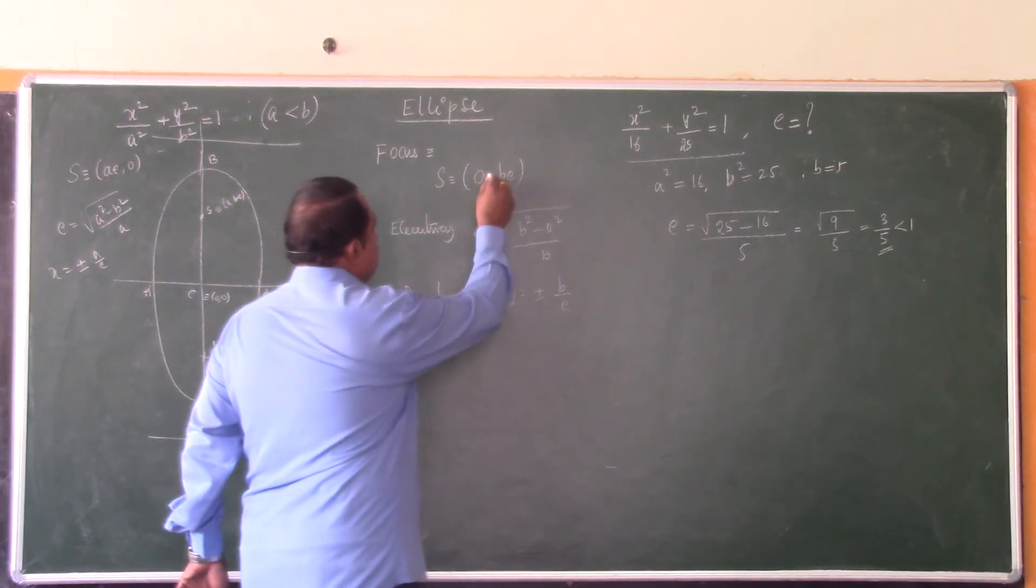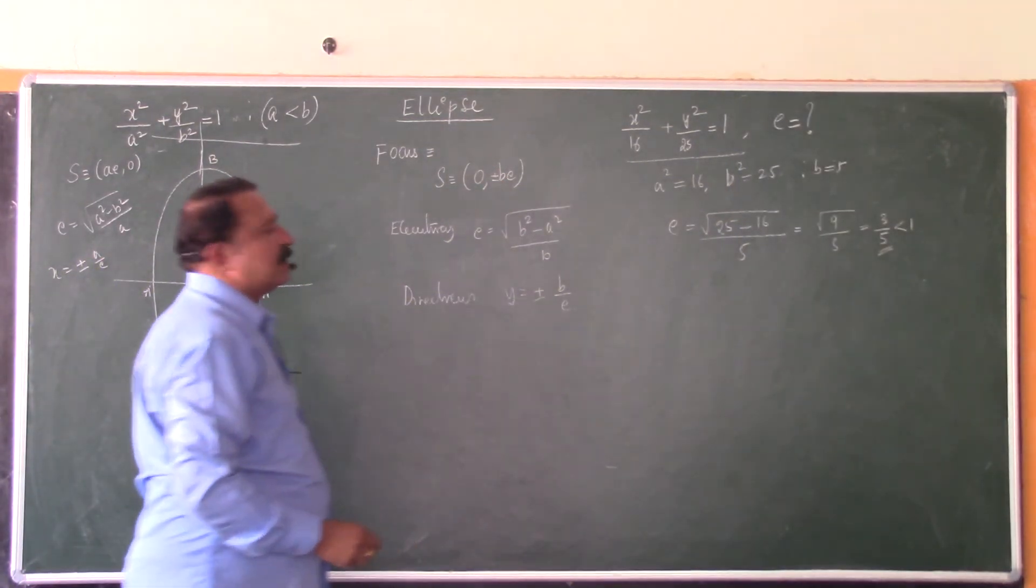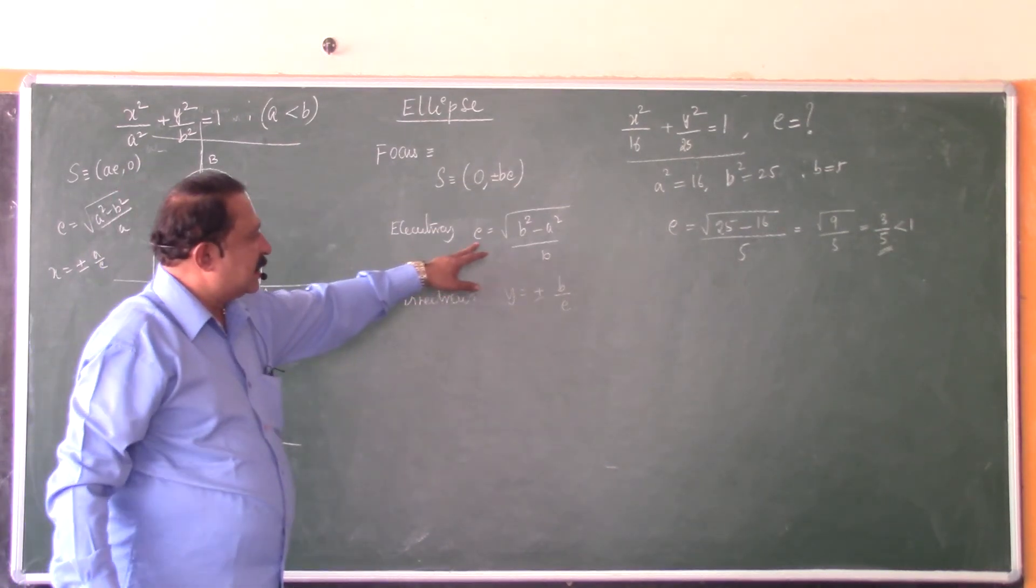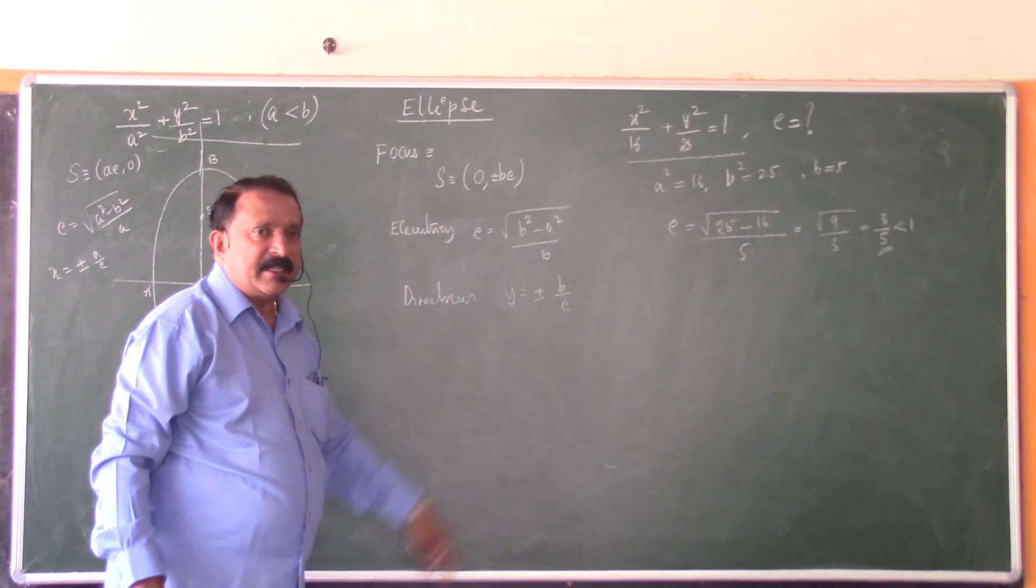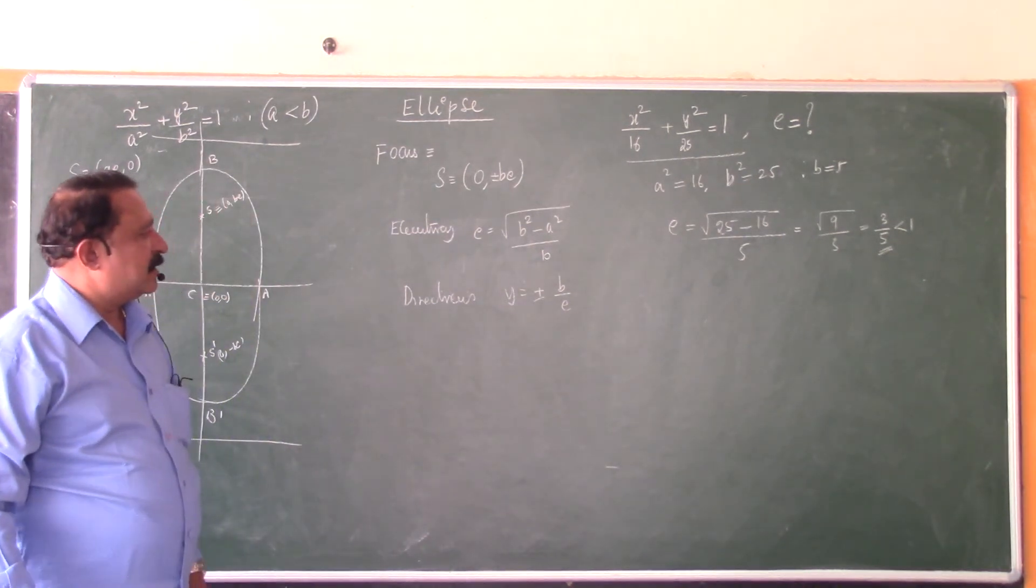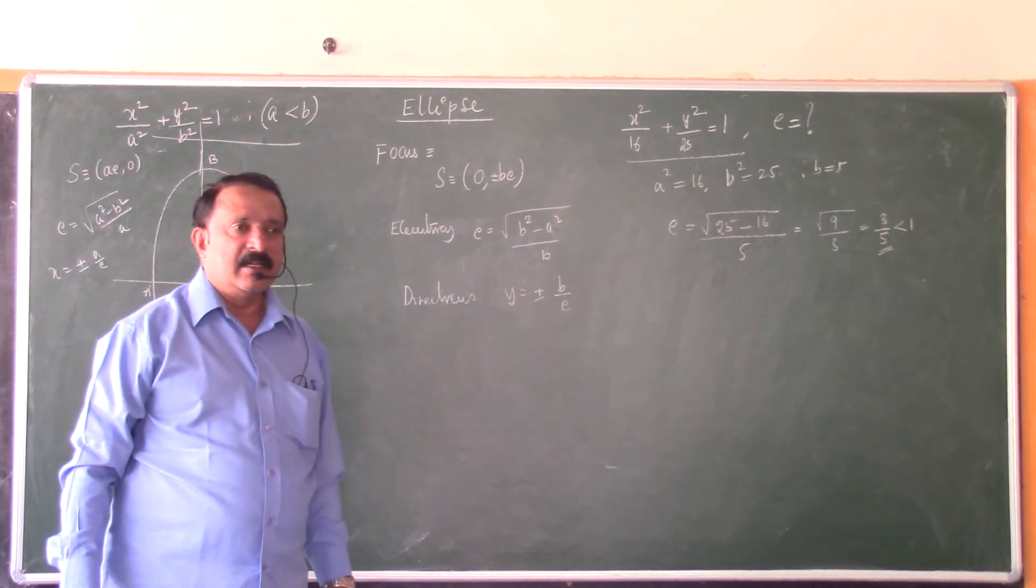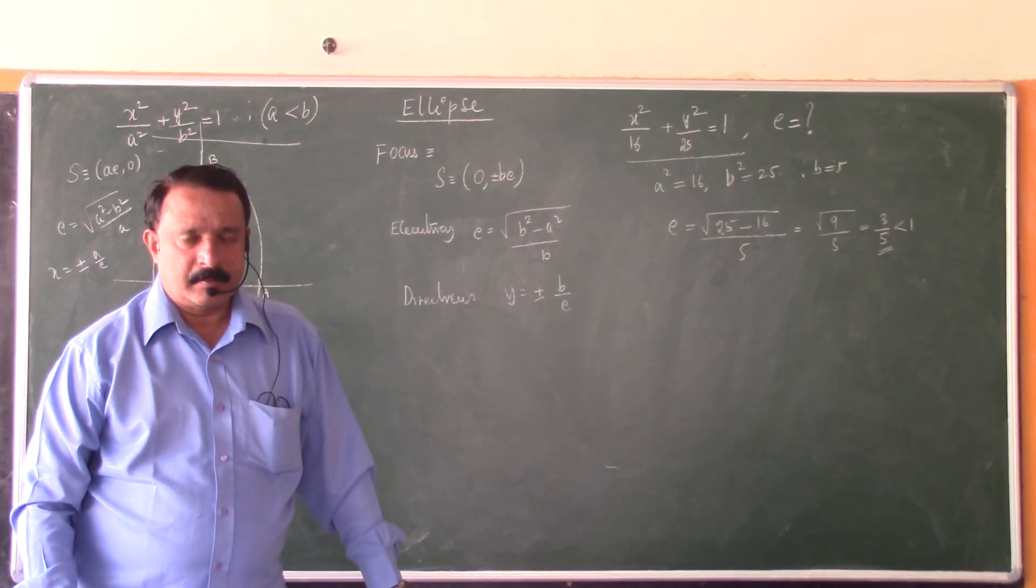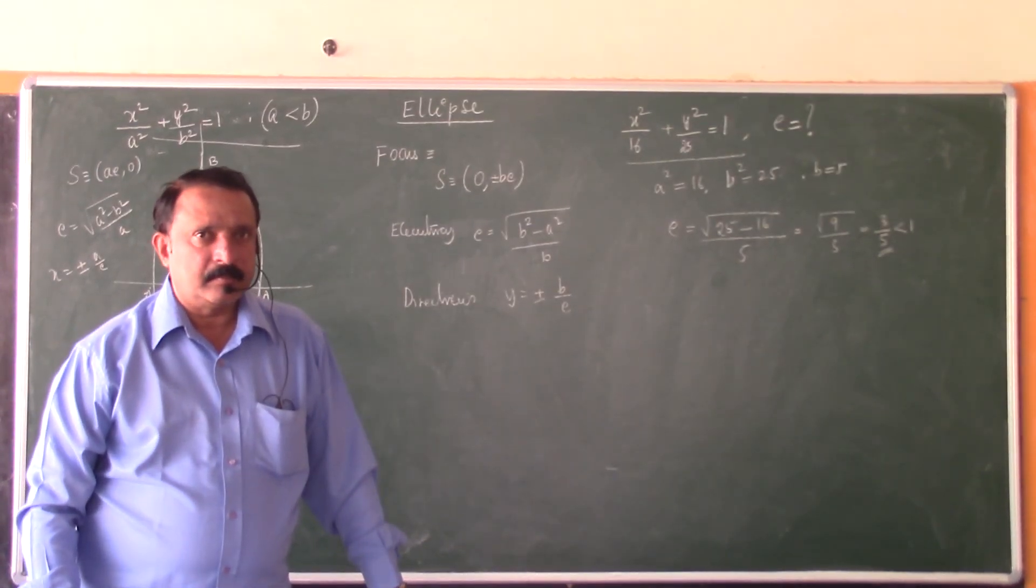Eccentricity is square root of b² minus a² by b. And directrices are y equals plus or minus b by e.